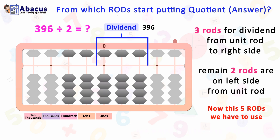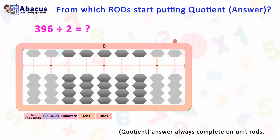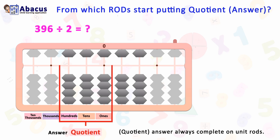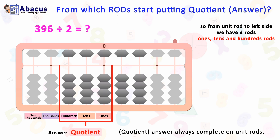The quotient answer completes on the unit rod. So from the unit rod to the left side we have three rods — ones, tens, and hundreds rods — so the answer will come on these three rods.